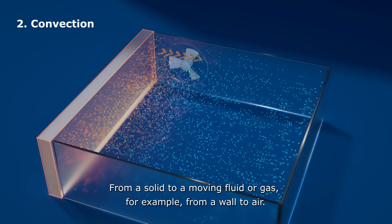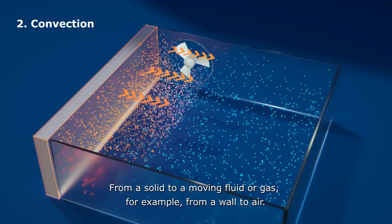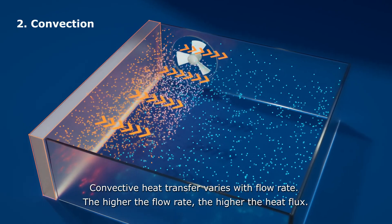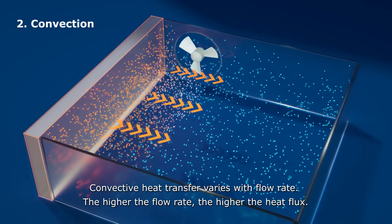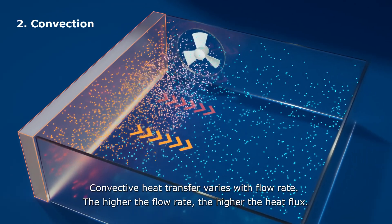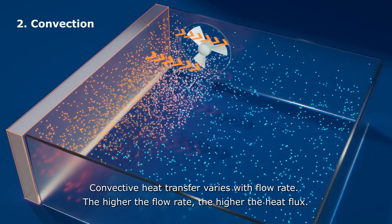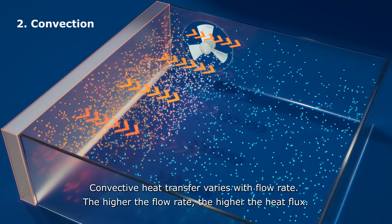The second mechanism is through convection — from a solid to a moving fluid or gas, for example from a wall to air. Convective heat transfer varies with flow rate; the higher the flow rate, the higher the heat flux.